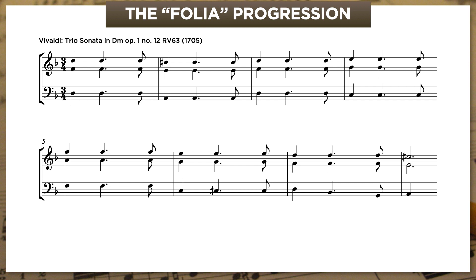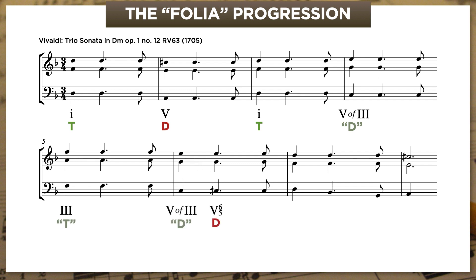The first two bars move from tonic to dominant. But then the second two bars move from tonic to five of three, and then on to three where the second half of the phrase starts. But then, in the middle of bar six, Vivaldi takes that subtonic in the bass and hoists it up a half-step, giving us the leading tone that will pull us back into the orbit of D minor. From there, it's just a boilerplate progression leading to the half-cadence.